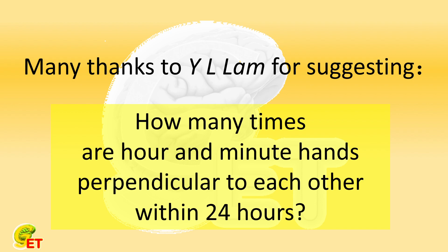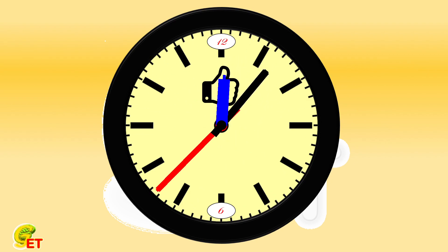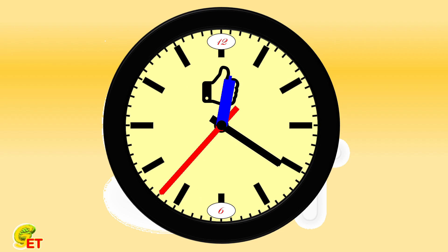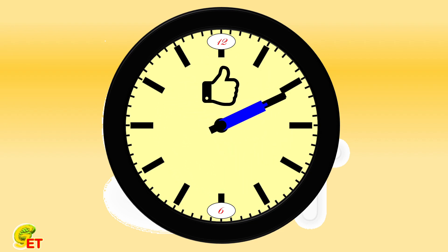Let's discuss this question in two ways. First, as we know, the rotation of the hands of a clock can be regarded as a chasing problem. The second hand keeps chasing the minute hand, and the minute hand keeps chasing the hour hand. We start counting from a certain time when the minute hand and the hour hand are at the same position, until the minute hand catches up with the hour hand for the next time. They have experienced perpendicular positions twice in total.